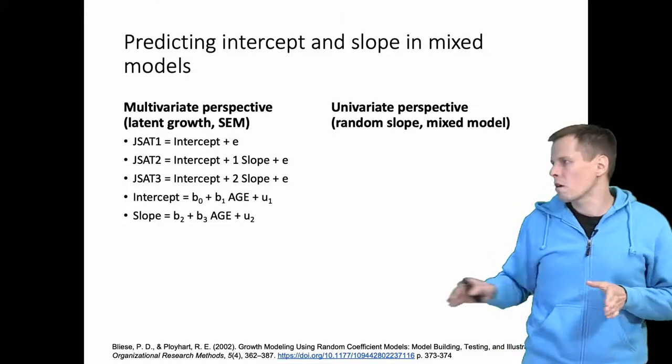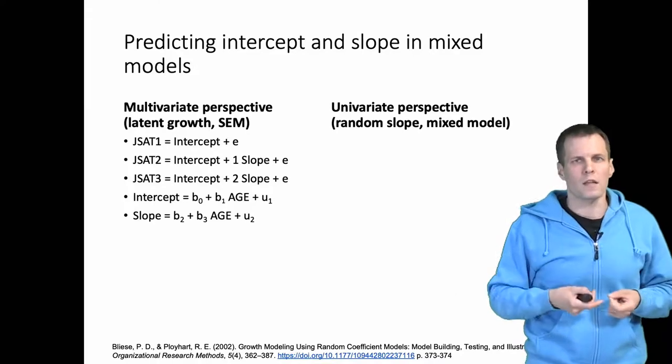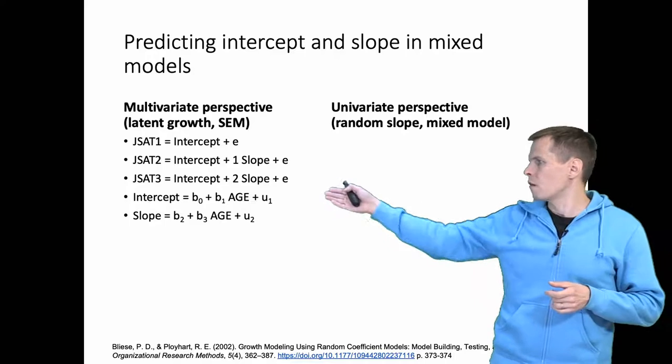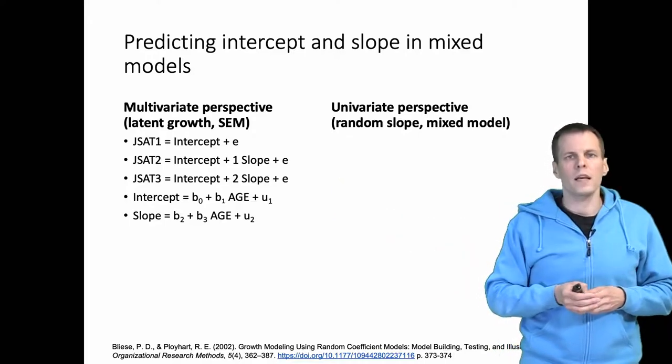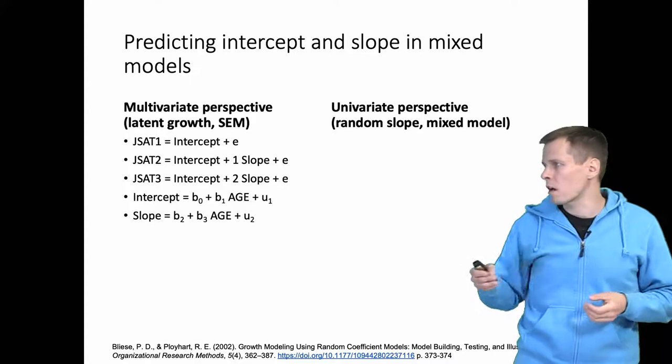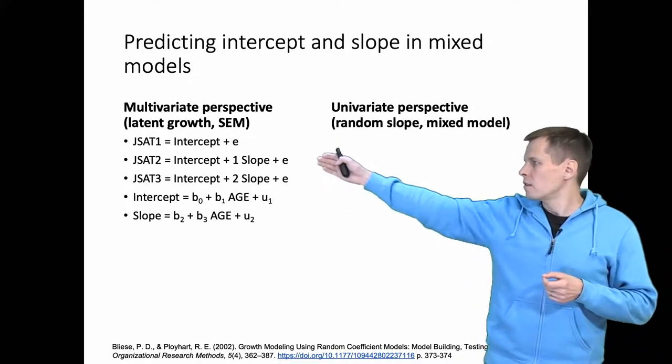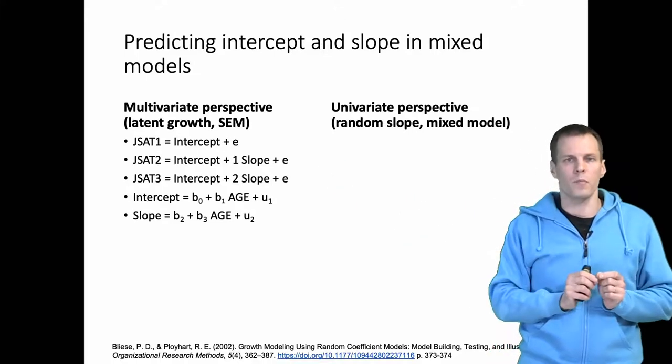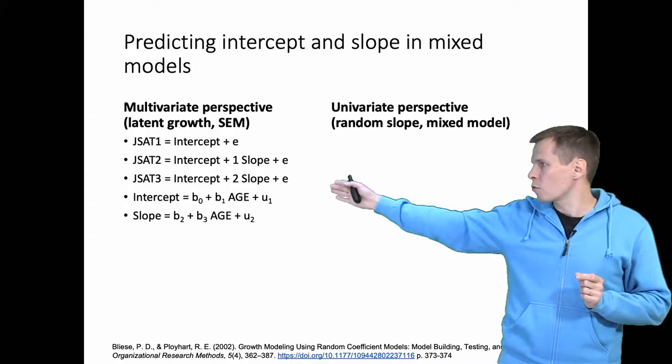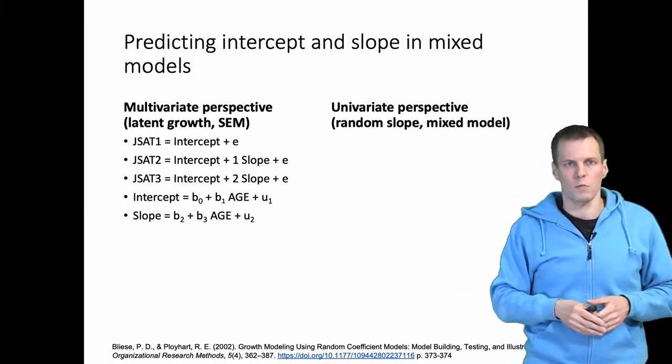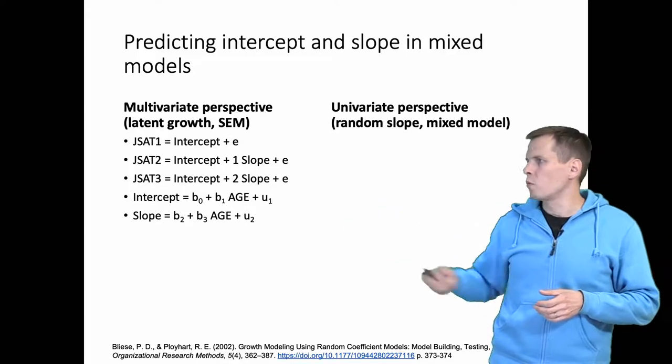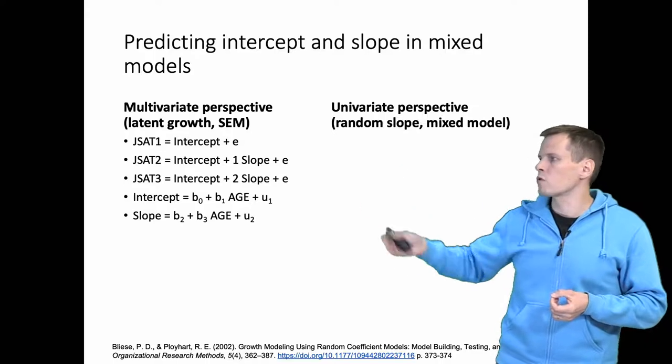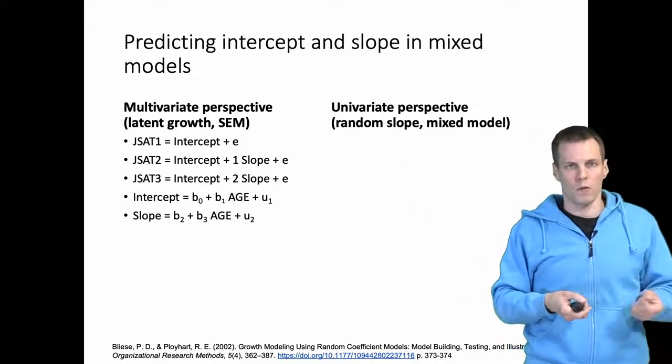Our data here comes from Ployhart and colleagues who studied job satisfaction in the army, and one of the variables they have is age. We are saying here that job satisfaction at time one is intercept plus an error term. Job satisfaction at time two is intercept plus one times the slope because we go one year from the initial period, and the third observation is the same but we take the slope two times. We explain intercept and slope with age. So this is a latent variable model where the intercept and slope are latent variables, age is an observed variable, and job satisfaction one, two, and three are observed variables.